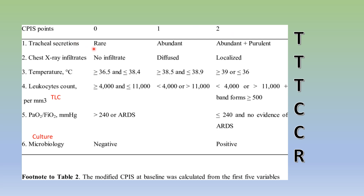For tracheal secretion: if it is rare, it is given 0 points. If the patient has abundant secretion, 1 point. If abundant and purulent, 2 points.